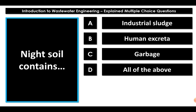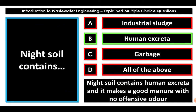Question: night soil contains — industrial sludge, human excreta, garbage, or all of the above? Night soil contains human excreta. It has very good fertilizer or manure value. While it contains human excreta and we are concerned with odor, it is totally stabilized manure without any offensive odor.